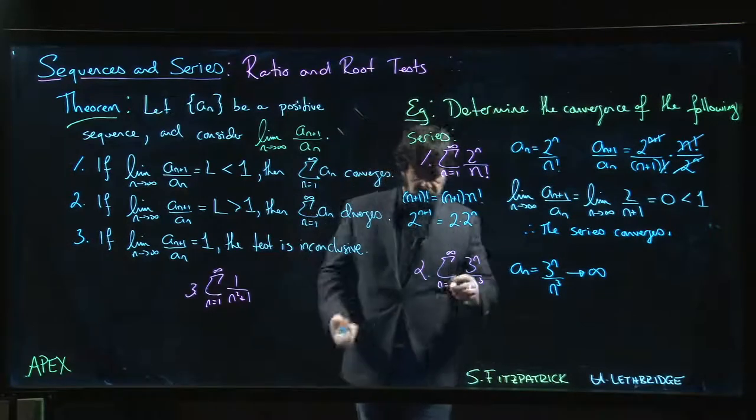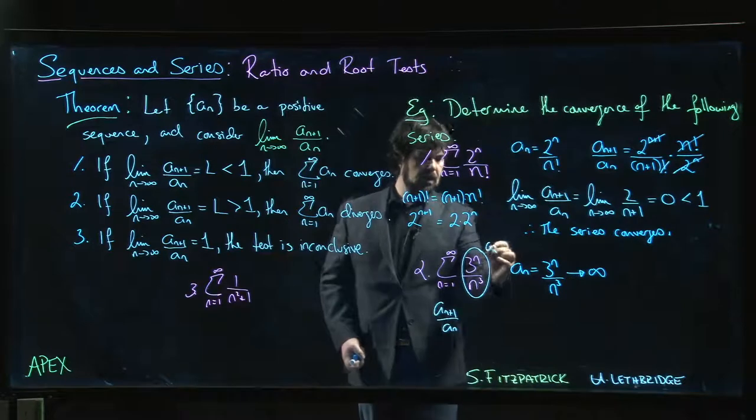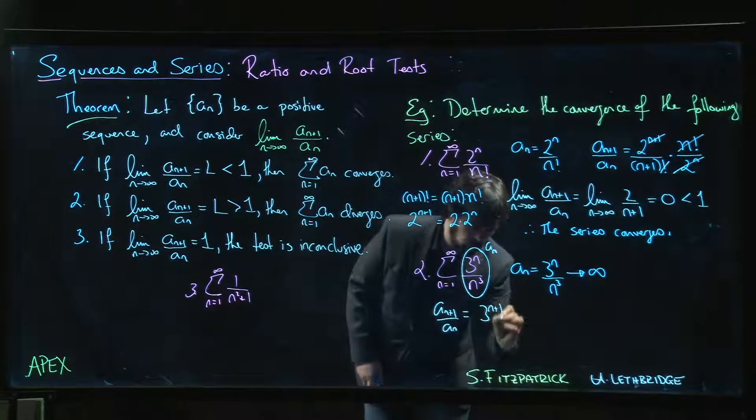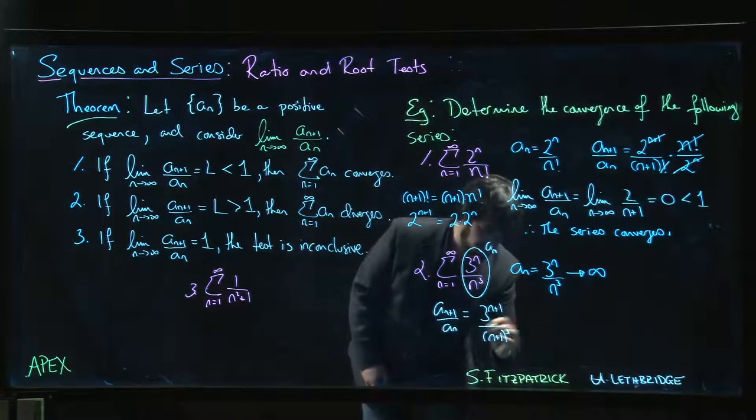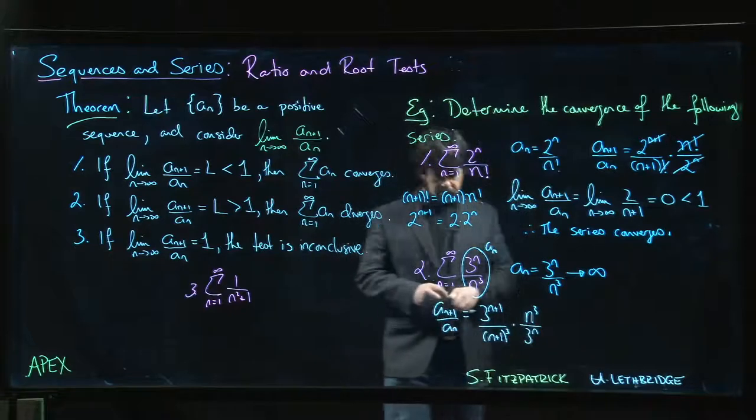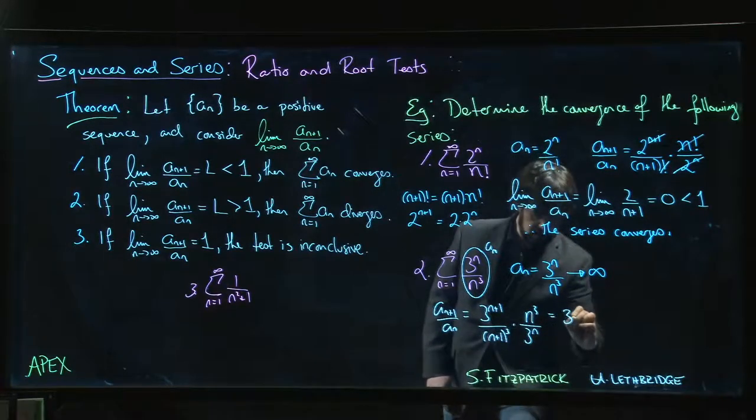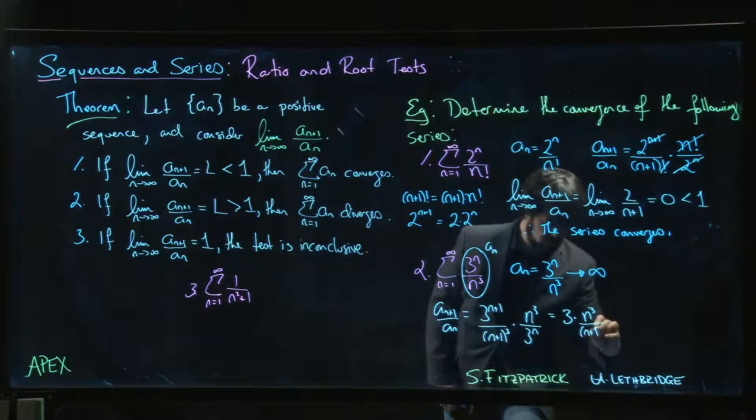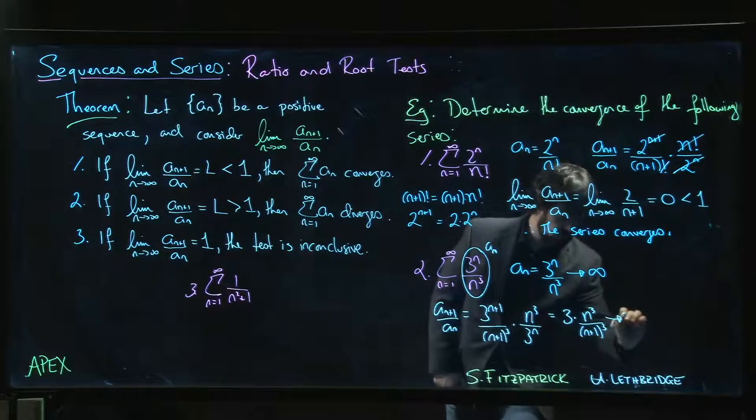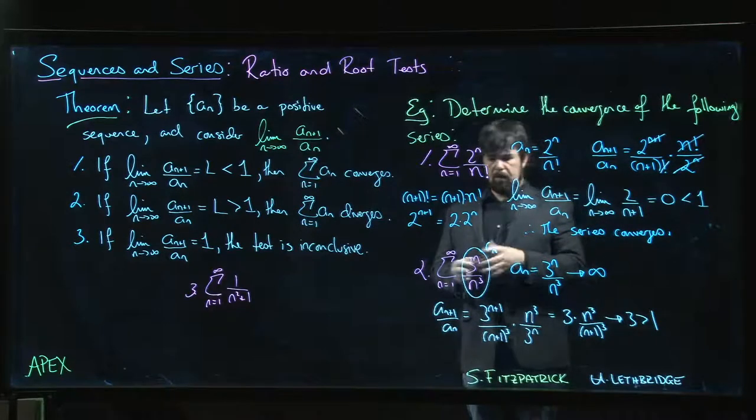So we could also see this from the ratio test. If we look at what is a_(n+1) over a_n? So this is my a_n here. And so if I put n plus one in there, I get three to the n plus one, n plus one cubed times, so one over a_n will be n cubed over three to the n. Okay, so that's going to give me three times n cubed over n plus one cubed. And in the limit, that's going to go to one. One times three goes to three. Three is bigger than one. So ratio test says it diverges.